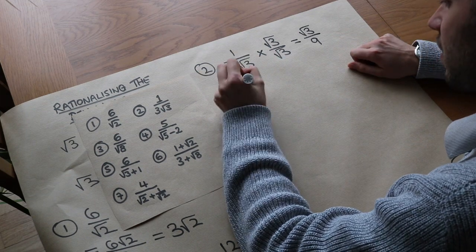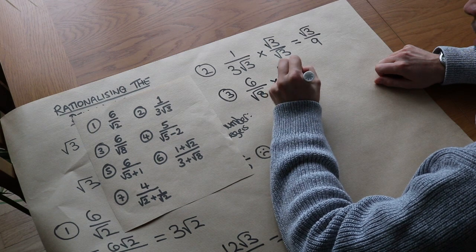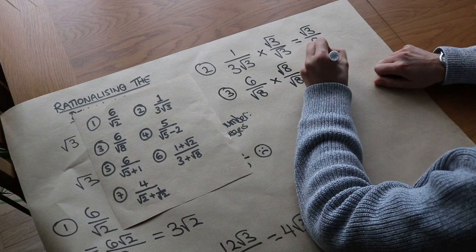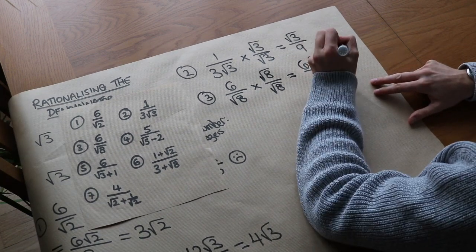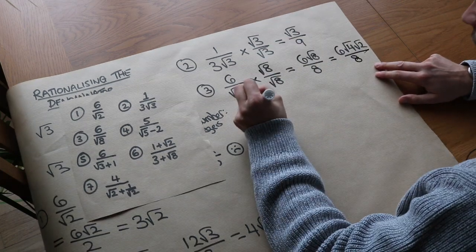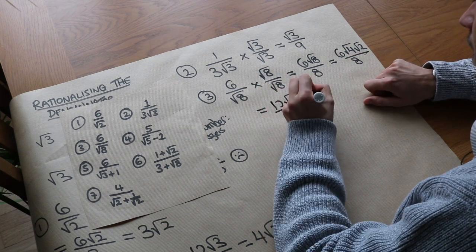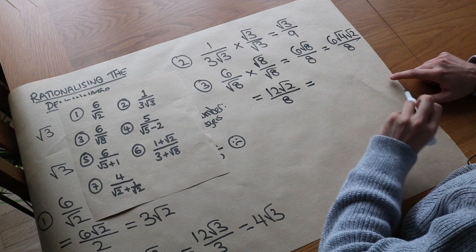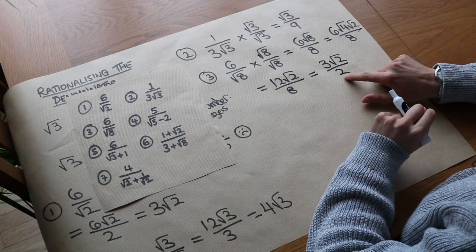Question 3: 6 over root 8. We multiply top and bottom by root 8, so the top becomes 6 root 8 and the denominator is root 8 times root 8 which is 8. Now we can simplify: root 8 can be written as root 4 times root 2, since 4 is the biggest square number going into 8. So 6 times root 4 is 6 times 2, giving 12 root 2 over 8. The 12 and 8 both divide by 4, giving 3 root 2 over 2.